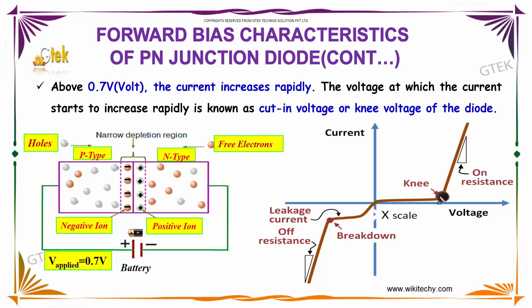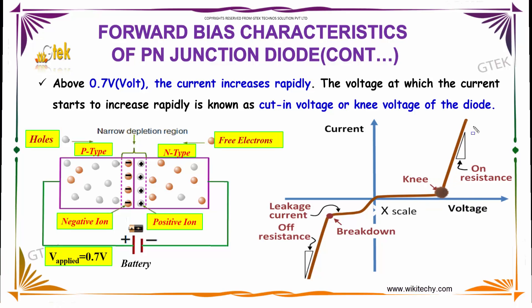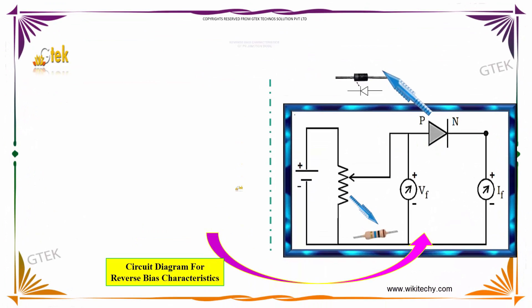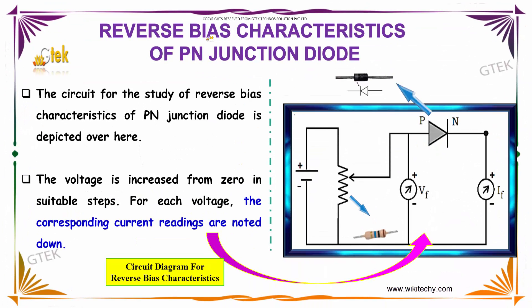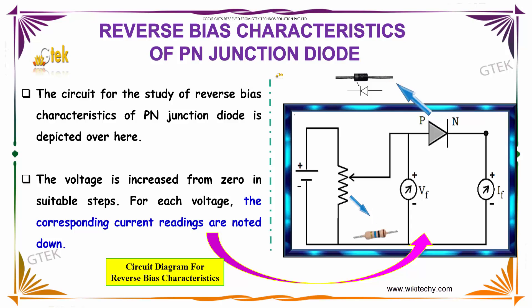As you can see here, from this point the current starts increasing. Now let us talk about the reverse bias characteristics of a PN junction diode.